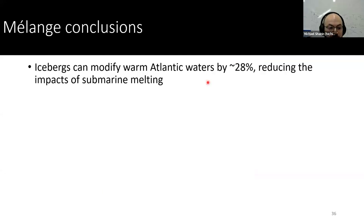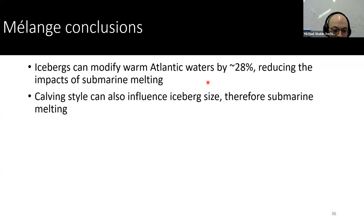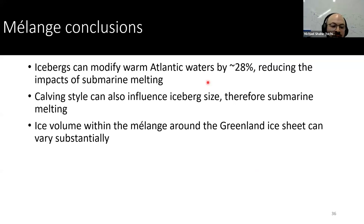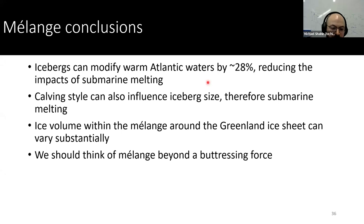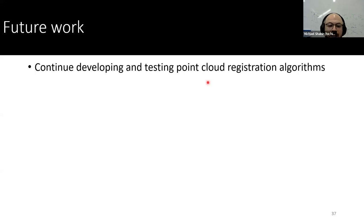And so that's my melange conclusions, mainly that there's about 28% reduction at most from icebergs from warm Atlantic waters. Calving style influences the iceberg size distribution and therefore actually relates to submarine melt. So maybe calving style is actually a bit more important than what I originally thought. Ice volume can vary substantially. And we, I think as a glaciology community should go beyond melange as a buttressing force because it can modify the plume heights as well as the warm Atlantic waters coming in. And for future work, I need to continue developing and testing point cloud algorithms to make better data for the community. Develop more robust error analysis for Atlas, apply the force balance analysis to Atlas, like what I explained earlier.